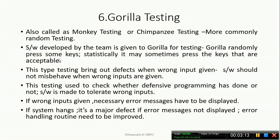This is the general idea behind Gorilla Testing. This type of testing brings out defects when wrong inputs are given. The main purpose of Gorilla Testing — or random testing or chimpanzee testing — is to check how the application responds to unacceptable input. This testing brings out defects when wrong inputs are given.